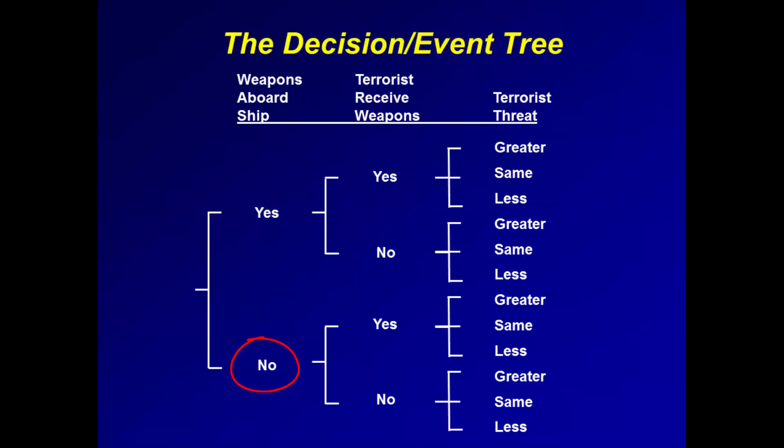The analyst says we have evidence that they are on board. I say I know, but what evidence would we see if the weapons were not on board? The analyst ponders: they're pretty heavy, so the ship would be high out of the water. I ask whether they've requested a photo of the ship — the analyst says no, and I tell them to do that. I then point at the 'yes' under 'terrorists receive weapons' and ask what the evidence would be. The analyst says there will be lots of activity in the terrorist camp: lights on at night, firing at the practice range, movement of trucks. I point at the 'no' and ask what evidence would indicate the terrorists do not receive the weapons. The answer: no activity, no lights, no practice firing, no trucks.